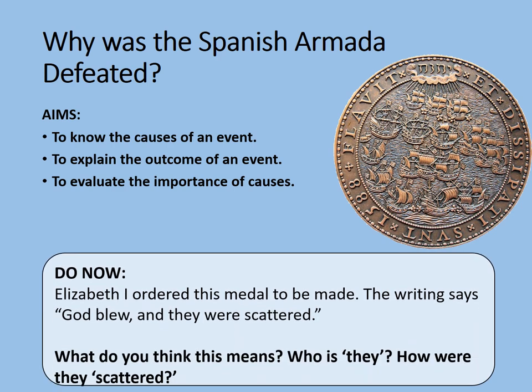Here's a do-now task. Have a look at the photograph of the object. Elizabeth I ordered this medal to be made. The writing says 'God blew and they were scattered,' only it says it in Latin. What do you think this means? And who is 'they'? And how are they scattered? Look at the medal closely and you might get a few clues. Pause the video while you complete this task.